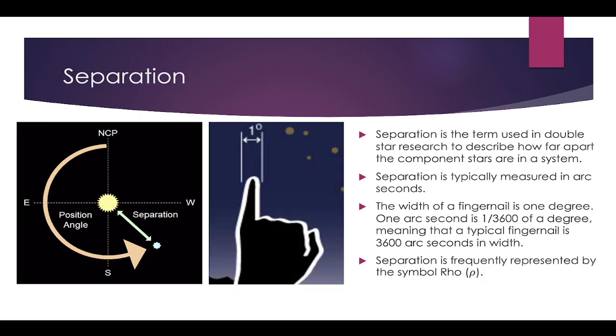The next thing we want to talk about is separation. Separation describes how far apart the two stars appear to our naked eye. It's measured in something typically the size of arc seconds. It can be arc minutes or degrees, but usually these stars are very, very close together, so we use arc seconds. The symbol we use for that is called rho.